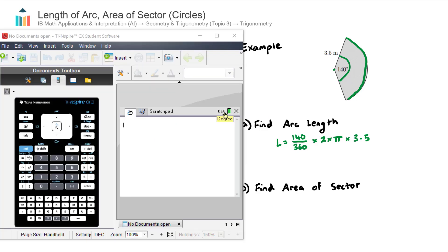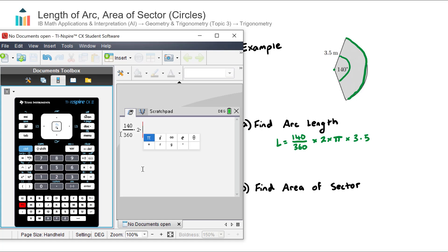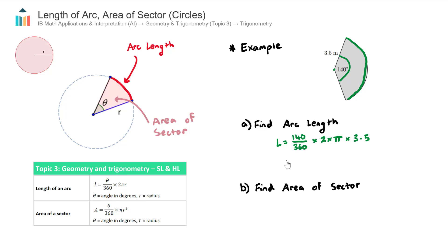We make sure our calculator is in degrees: 140 divided by 360 multiplied by 2 multiplied by pi multiplied by 3.5. The length of the arc rounded to three significant figures is 8.55 meters.